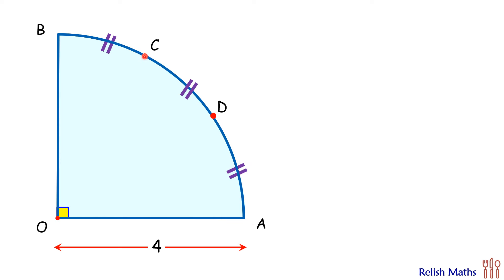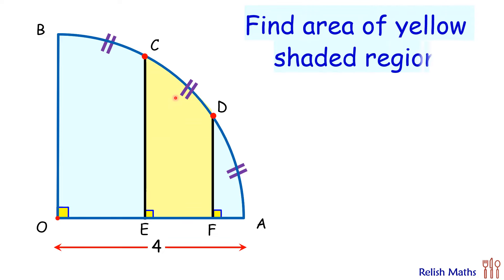From point C we are dropping a perpendicular and from point D we are dropping another perpendicular. Question is to find the area of this yellow shaded region.